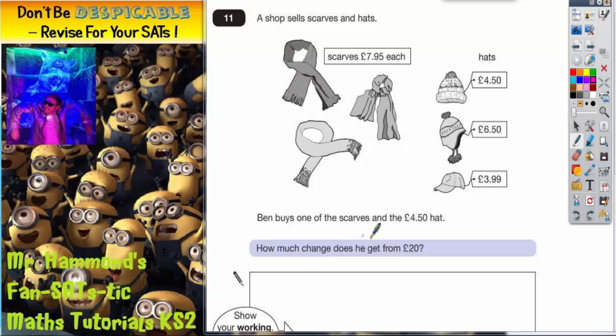It says Ben buys one of the scarves and the £4.50 hat. So he's spending £7.95 and £4.50 on the hat. He's not interested in either of these two hats, so actually these two prices might as well not be there. You don't need to do them.